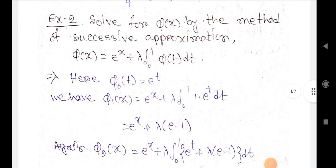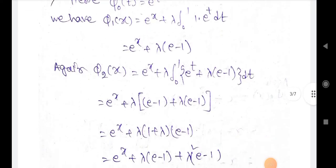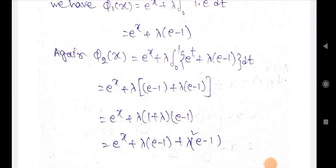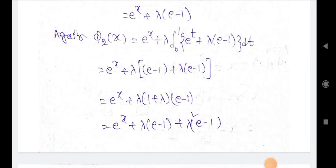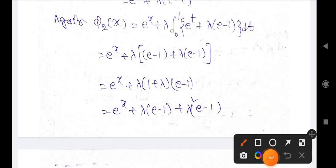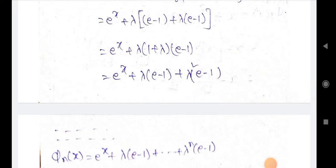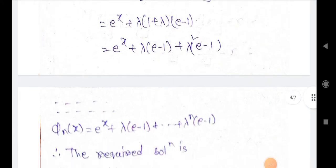Here φ₀(t) = eᵗ. We have φ₁(x) = eˣ + λ·∫₀¹ 1·eᵗ dt = eˣ + λ(e - 1). Again, φ₂(x) = eˣ + λ·∫₀¹ (eᵗ + λ(e-1)) dt. Solving, we get eˣ + λ(e-1) + λ²(e-1) = eˣ + λ(e-1)·(1 + λ).